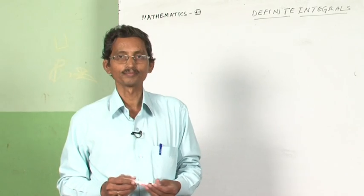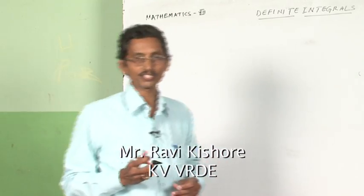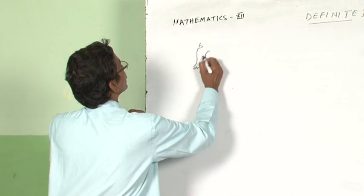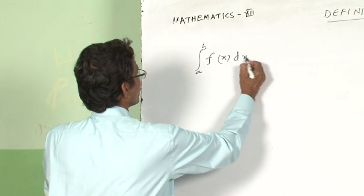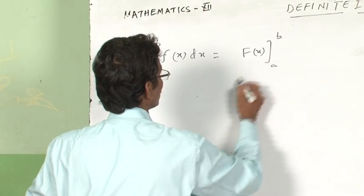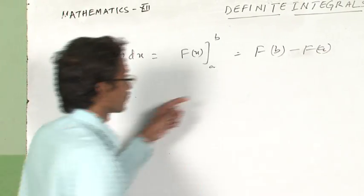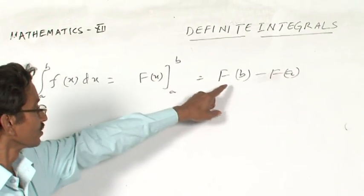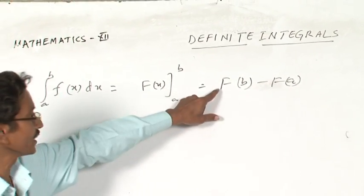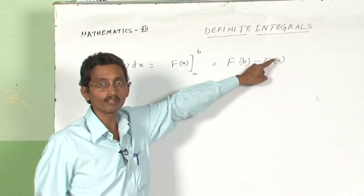Good morning students. Today I recapitulate what we learnt in the previous session. The integral from a to b of f(x) dx equals F(x) evaluated from a to b, which equals F(b) minus F(a). This means the value of the anti-derivative at the upper limit minus the value of the anti-derivative at the lower limit.